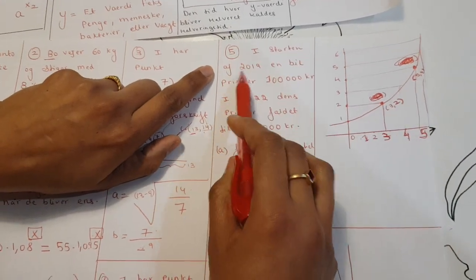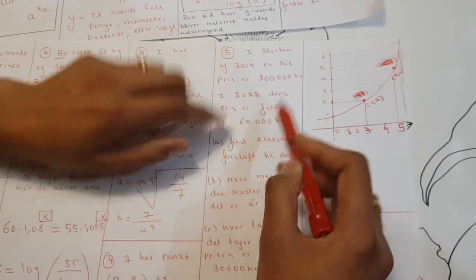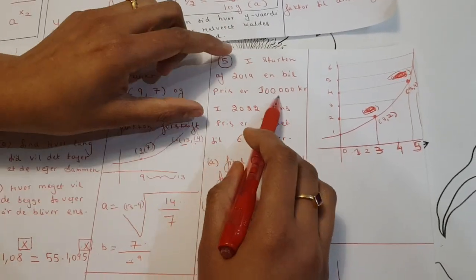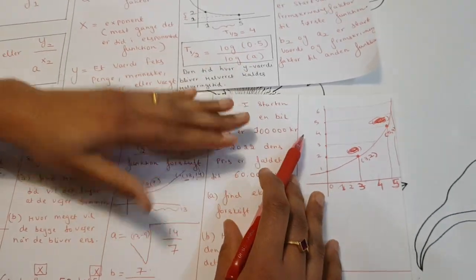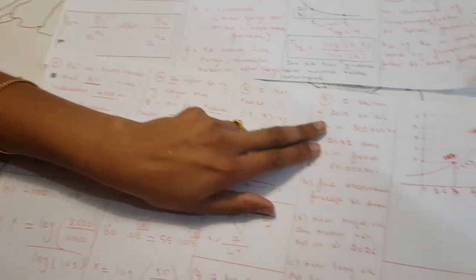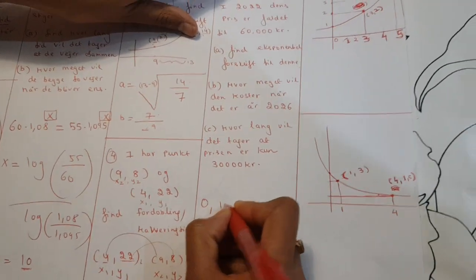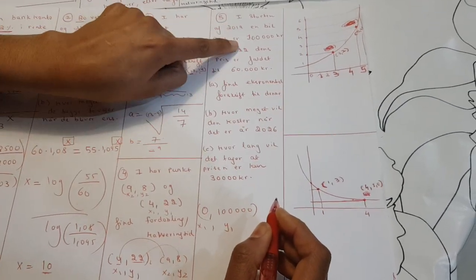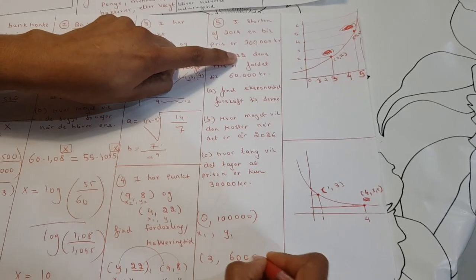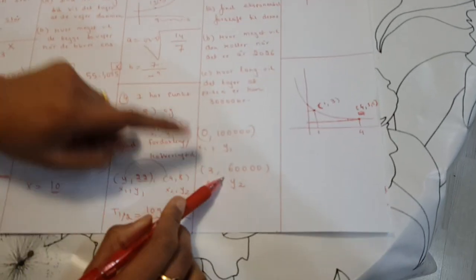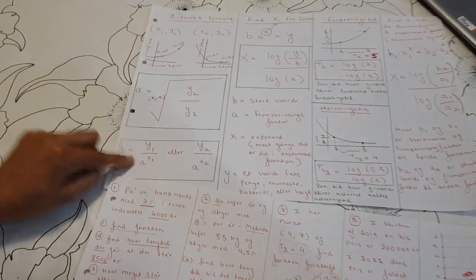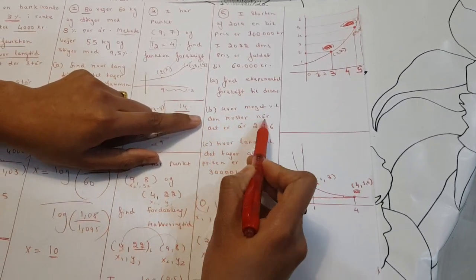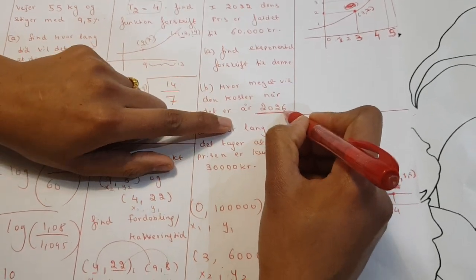Next problem. Here in the start, it's 2 million for a car, and there's no percent given. That means it's not direct information. I can see it's a two-point problem. Since there's no percent, it's not direct. So now I look at the start, which is zero and 100,000. That's my point one, x1, y1. Then I look at 2020. How long did it go by? It went three years, so that's three and 60,000. So I have my x2 and y2. So from our two-point formula, I can find my a and I can find my b. And when I have a and b, I can write the function.